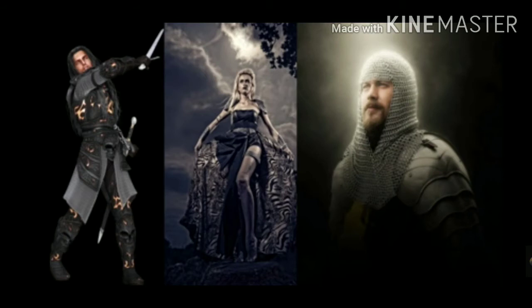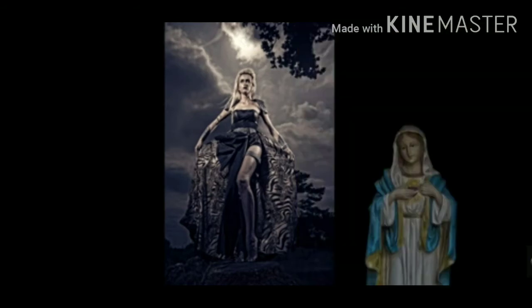They hope to both preserve their honour by ensuring her ongoing sexual purity and eventually inherit her fortune by forcing her to remain a widow. In order to make sure they have their way, Ferdinand gets Bosola a position on the Duchess's estate and hires him to be his spy. Bosola does not want to be a spy, but he feels it is his duty to obey the Duke, even if doing so makes him corrupt.